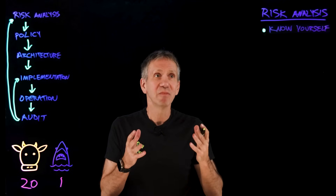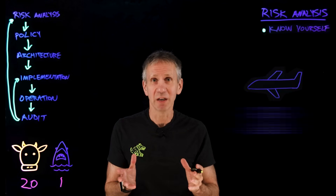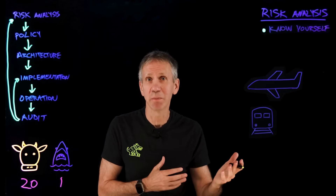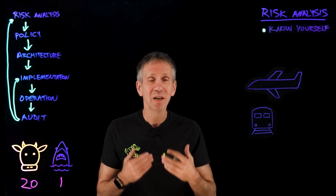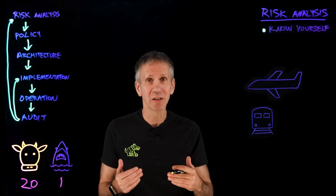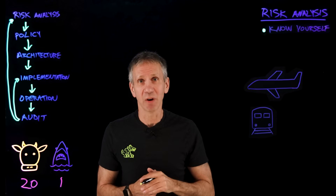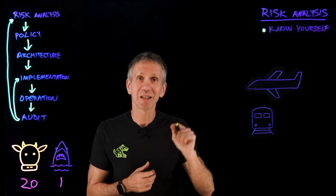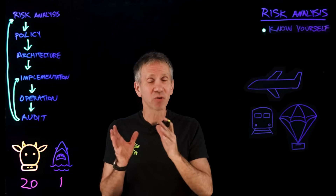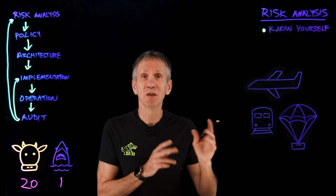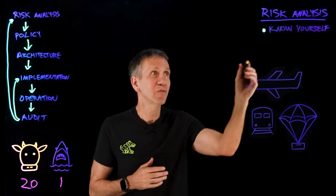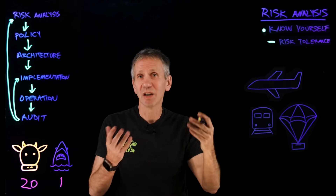Some people will not get in an airplane — they will only take a train. So if they want to go from the east coast to the west coast, they may be looking at four or five days on the train each way. In my case, I've flown more than four million miles, so I don't mind getting in an airplane. What I do mind is getting out of the plane before it's on the ground. My neighbor has a different risk tolerance — he likes to get out of airplanes while they're still in the air, with a parachute of course. So there you have three different risk tolerance models: the train, the plane, and the parachute.